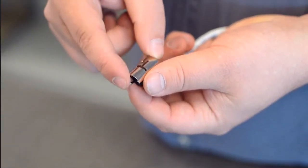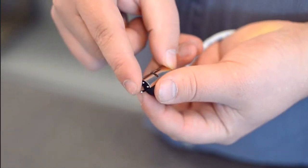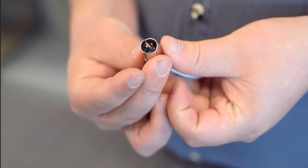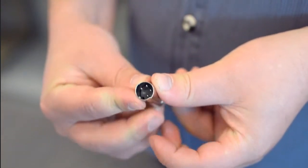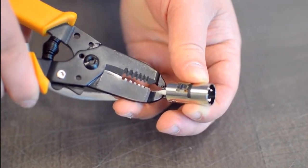After you have soldered the necessary points on the connector, place the metal shell around the pins. Squeeze the strain relief tab onto the cable jacket and slide up the boot.